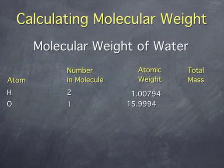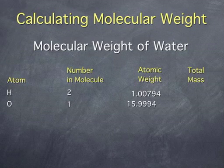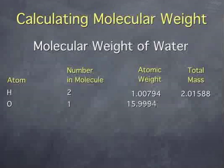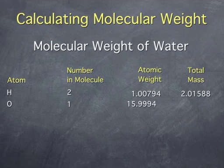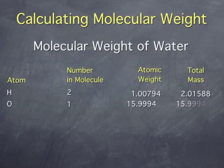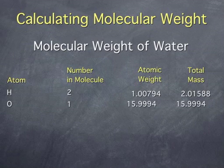Since there are two hydrogens in the molecule, the total weight of hydrogen is 2 times 1.00794, or 2.01588. There is only one oxygen, so the total weight of oxygen is 15.9994.